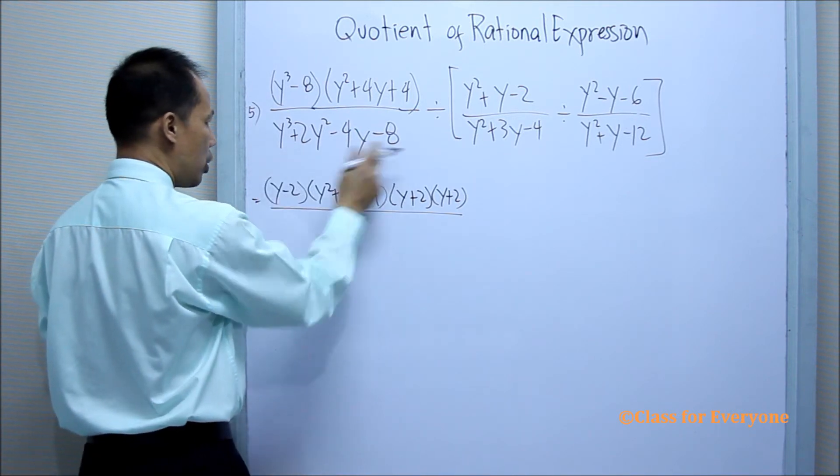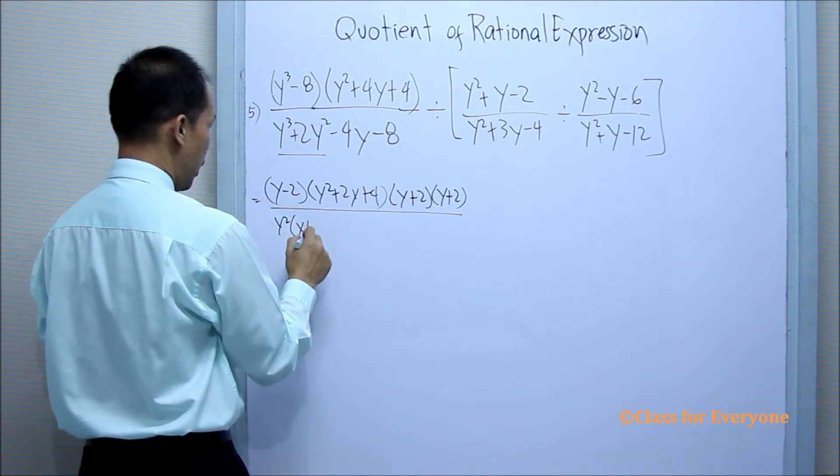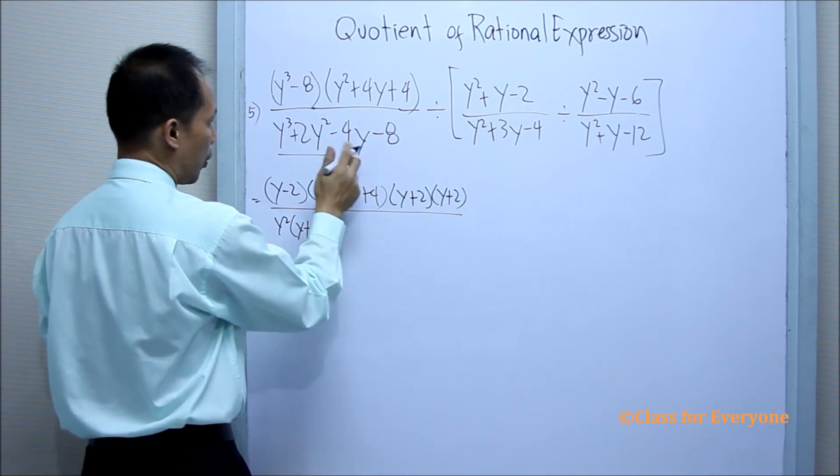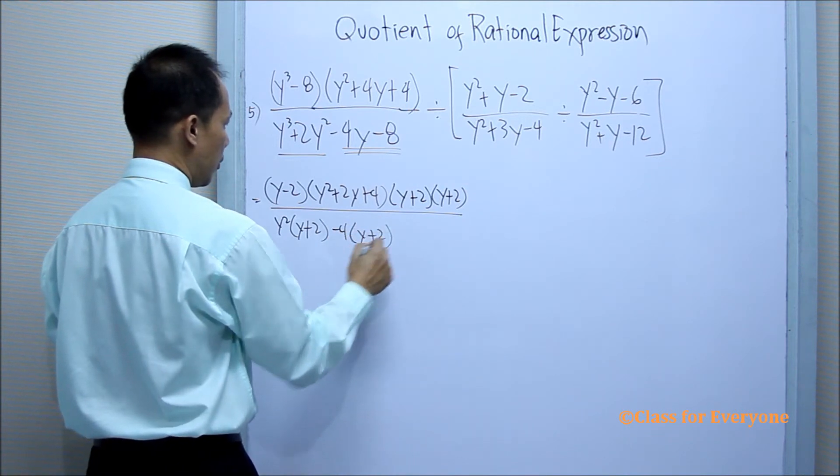We can factor this by grouping. There is a common factor of y squared, so that will be y plus 2. There is a common factor of negative 4, so that will be y plus 2.